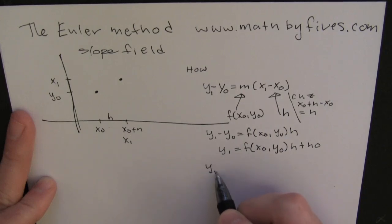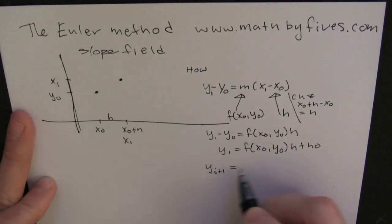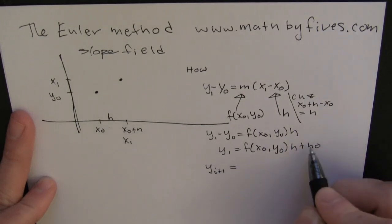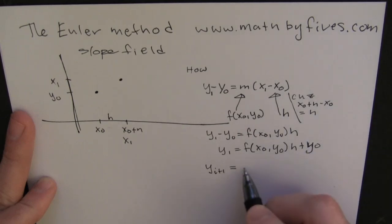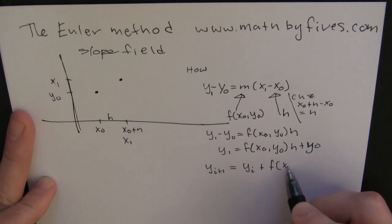My new y-value is going to be the slope-field evaluated at the point times the step size, h, plus my old y-value. Totally makes sense. Let's go through and let's find one of these guys.